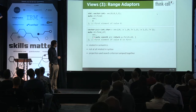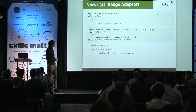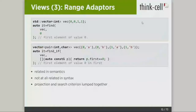You would like to make them look similar. The reason they are dissimilar is that we lump together the projection and the search criterion. Here, p.first is the projection — you are talking about the first element — and then equal zero is really your search criterion. We've kind of lumped everything together in a single lambda.